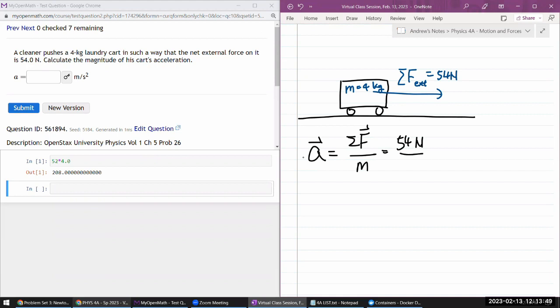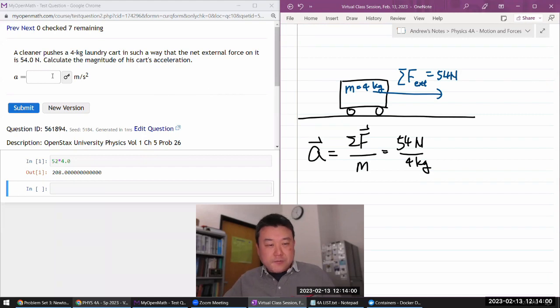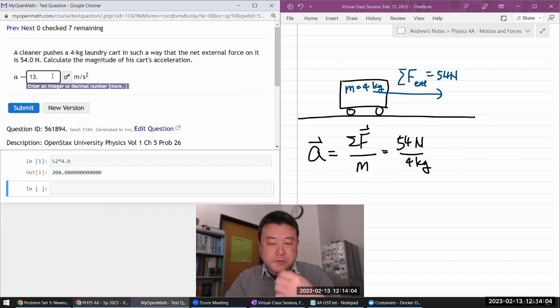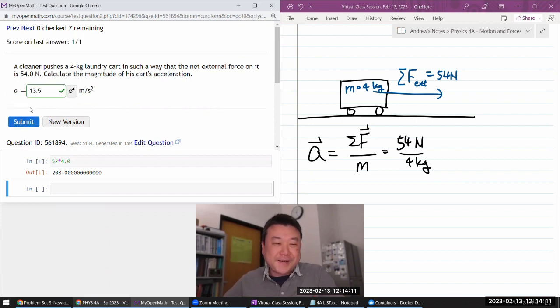and the mass, 4 kilograms. So the acceleration in the same direction as net force should be, oh, let's see. Can I do this in my head? So 54 divided by 4 would be 13.5 meter per second. Okay, if I get it wrong, I'll just use the calculator. Okay, all right. Yeah,